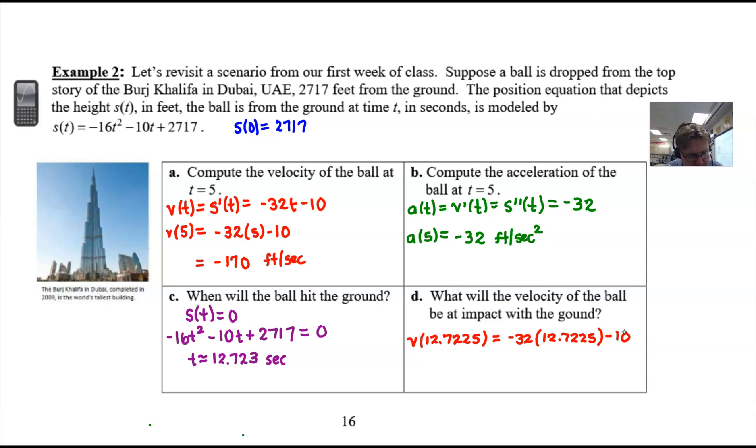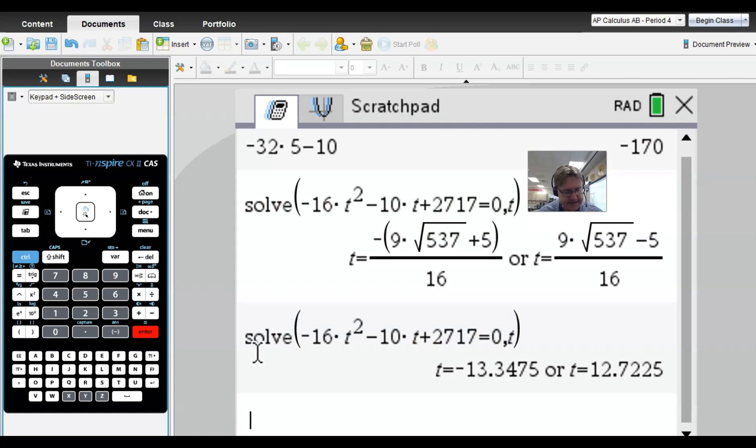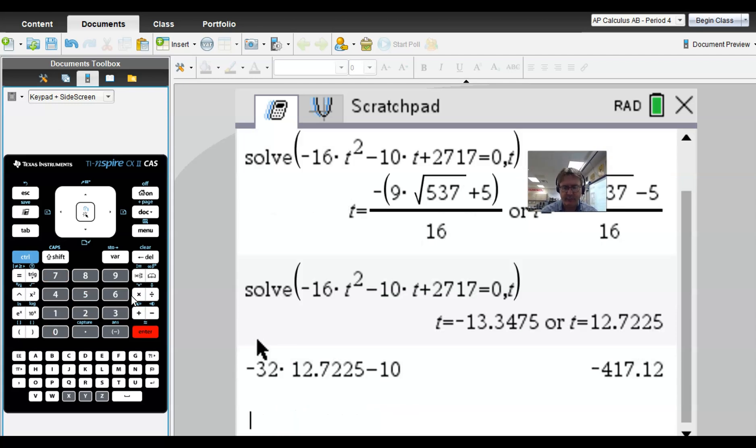Here we are. We're going to enter -32 and multiply that by 12.7225, then subtract 10. That will give us -417.12. It's always a good idea to double check and make sure there aren't any other additional decimal places. This one turns out it doesn't—it terminated at the hundredths unit of two.